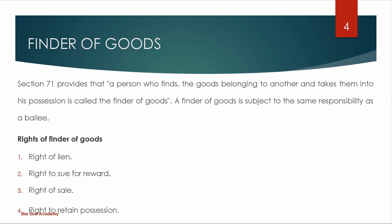Next is the right to sue for reward. If you find goods, you can ask the owner for a reward. You can ask the owner to give you a reward. If you want to exercise the right of sale, the perishable nature of the goods applies — if you don't have any charges on this, you will pay two-thirds of the amount of goods.